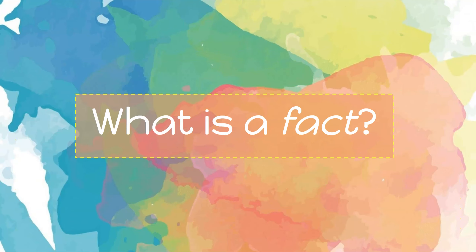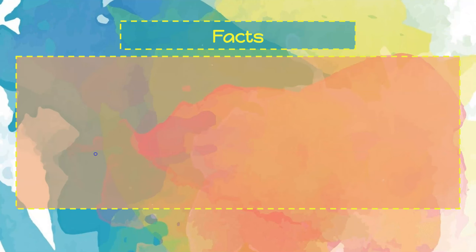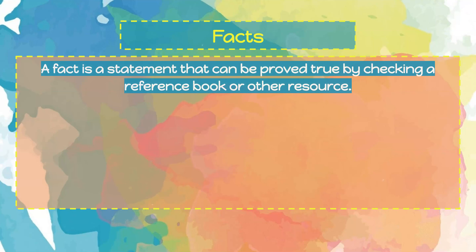What is a fact? A fact is a statement that can be proved true by checking a reference book or other resource. This is something that can be proven. Here are some examples.